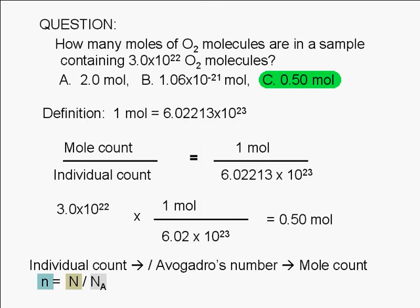The same basic idea is involved when we convert any individual count to a group count. For example, if you have 36 eggs, you divide it by 12 to get the dozen count. 36 divided by 12 is 3. 36 eggs is equivalent to three dozen eggs.